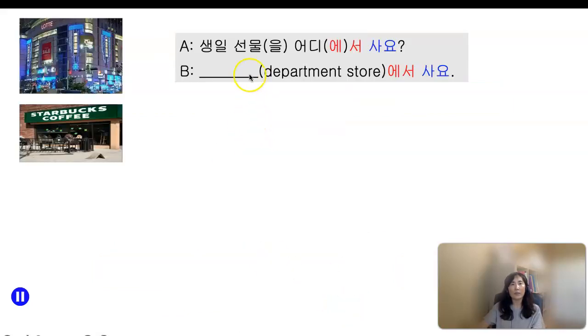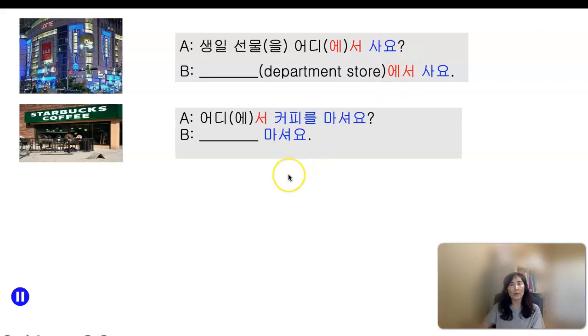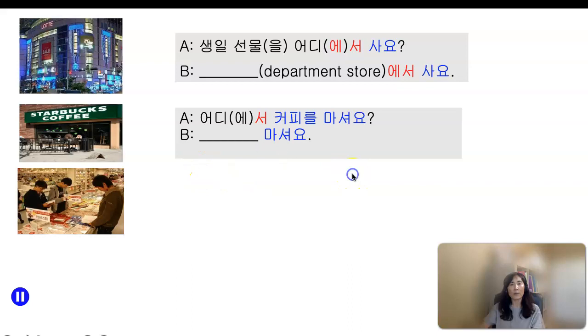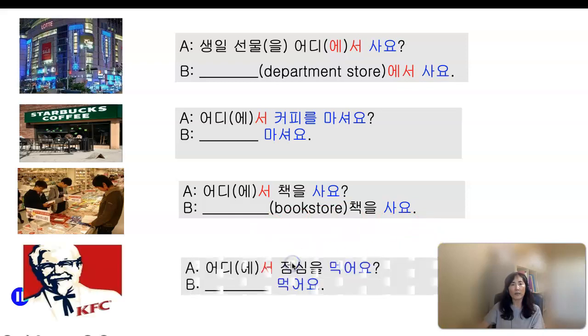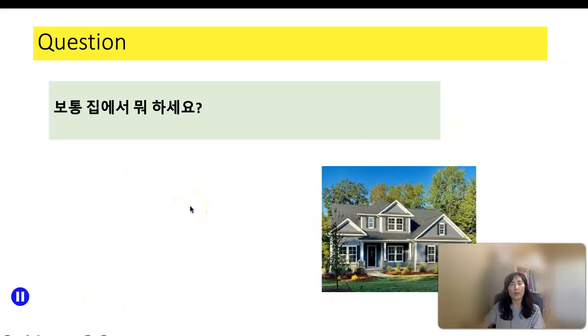어디에서 선물을 사세요? 생일 선물을 어디에서 사세요? Where do you buy a birthday gift? 백화점에서 사요. 어디에서 커피를 마셔요? 스타벅스에서 마셔요. 어디에서 책을 사요? Where do you buy your books? 서점에서 책을 사요. 어디에서 점심을 먹어요? Where do you eat your lunch? KFC에서 점심을 먹어요.